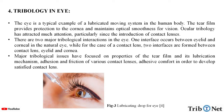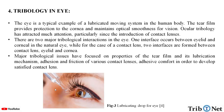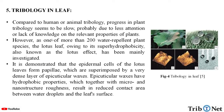There are two major tribological interactions in the eye. One interface occurs between the eyelid and cornea in the natural eye, while for the case of the contact lens, two interfaces are formed between the contact lens, eyelid, and cornea. Major tribological issues have focused on properties of the tear film and its lubrication mechanism, adhesion and friction of various contact lenses, and adhesive comfort in order to develop satisfactory contact lenses.